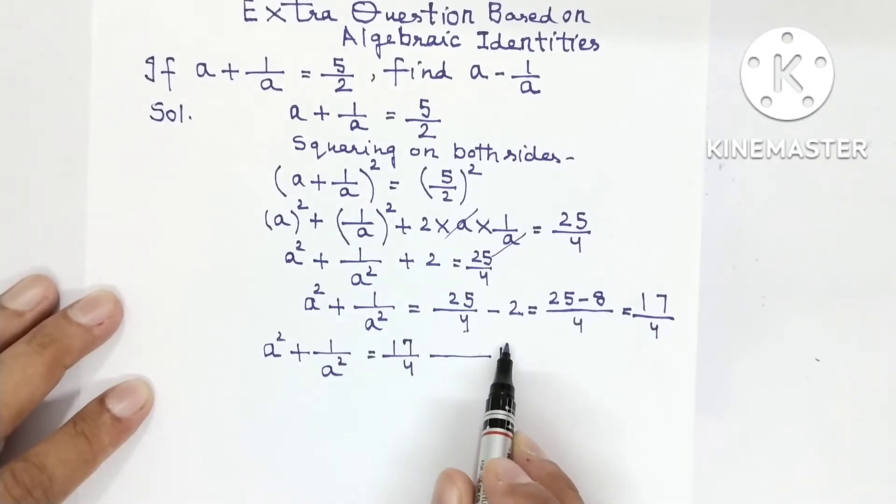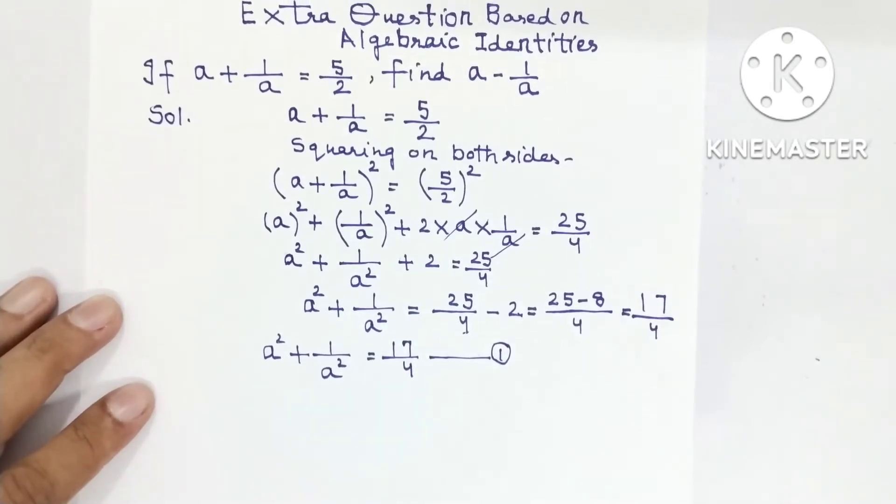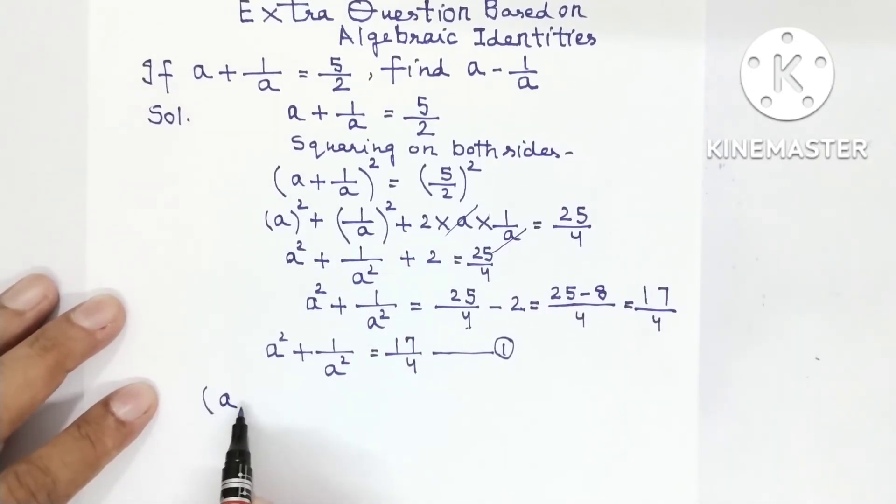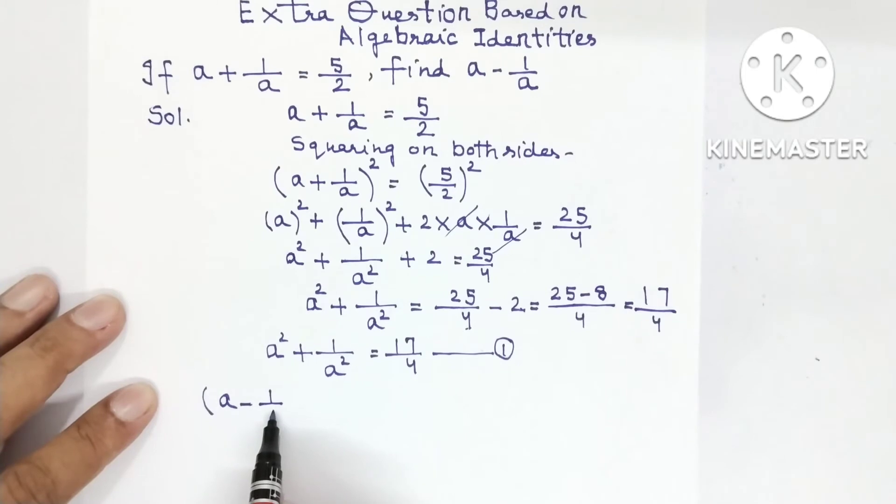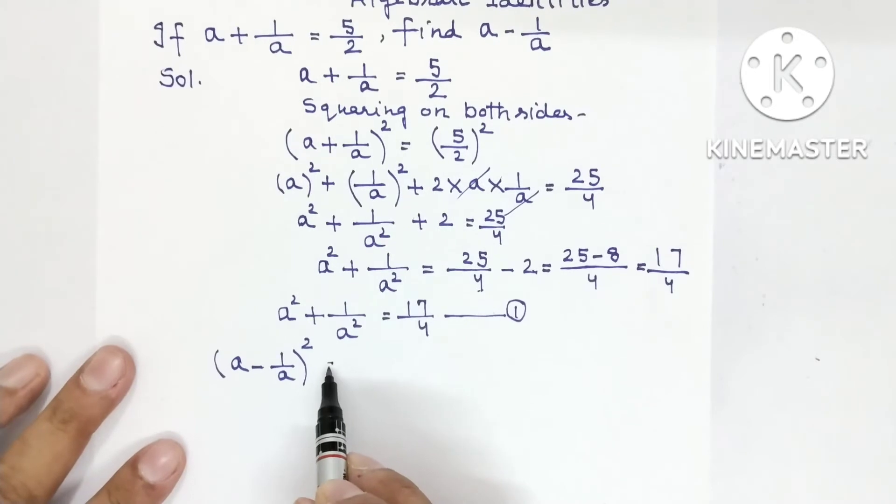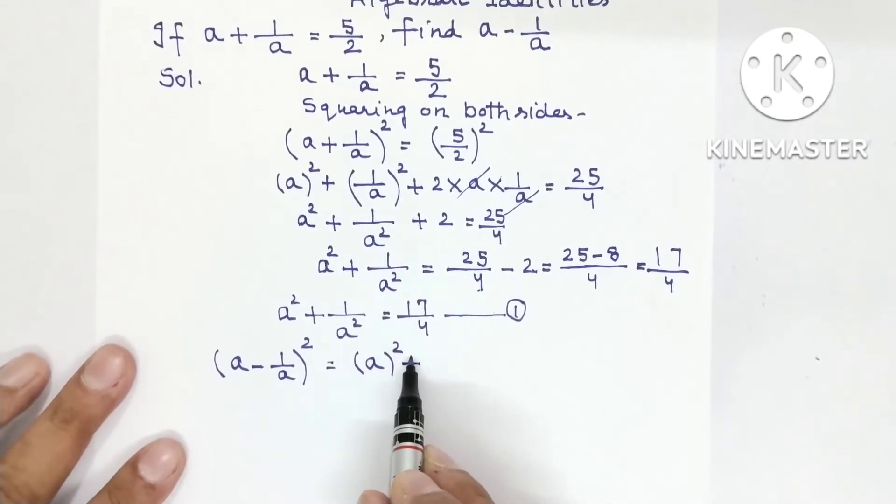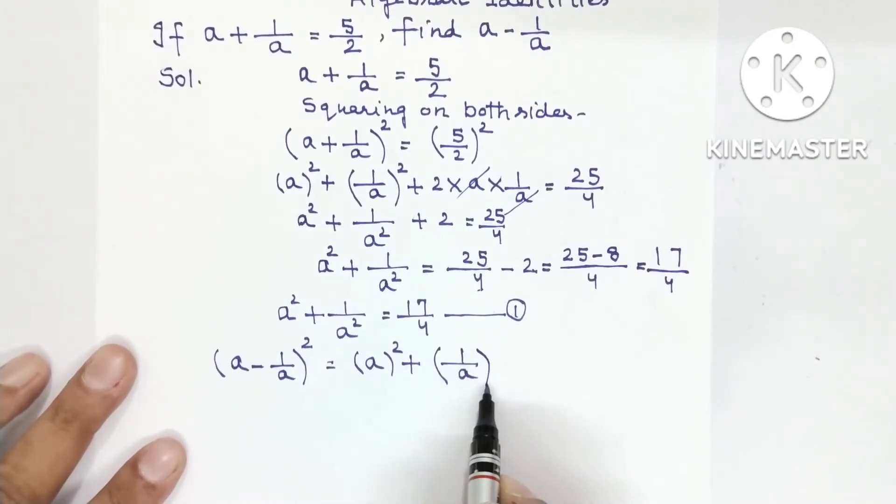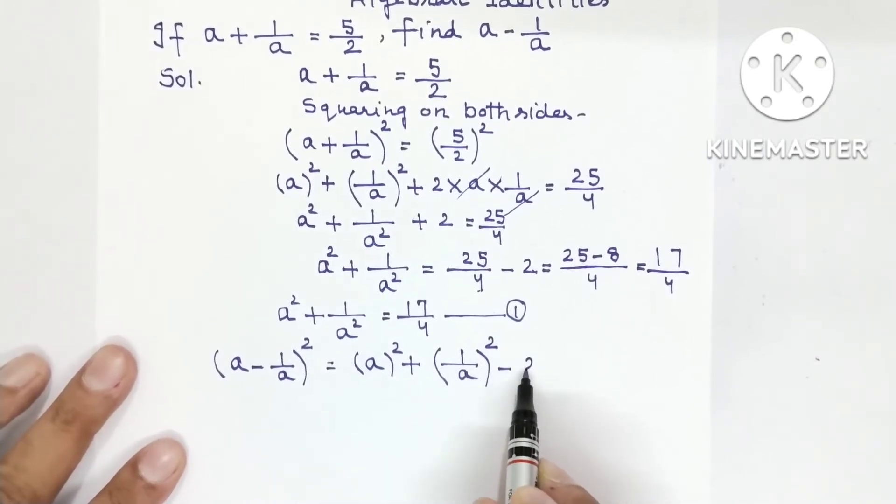Equation number 1. This value will be used for a - 1/a. (a - 1/a)². (a - b)² is a². So it will become a² plus b². So it will become (1/a)² minus 2ab.